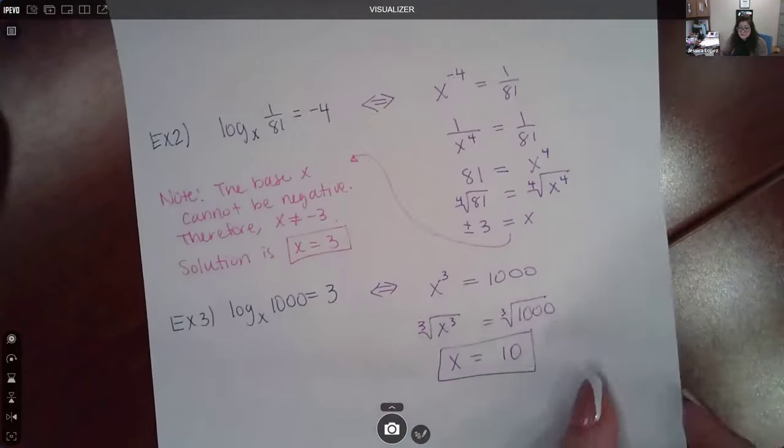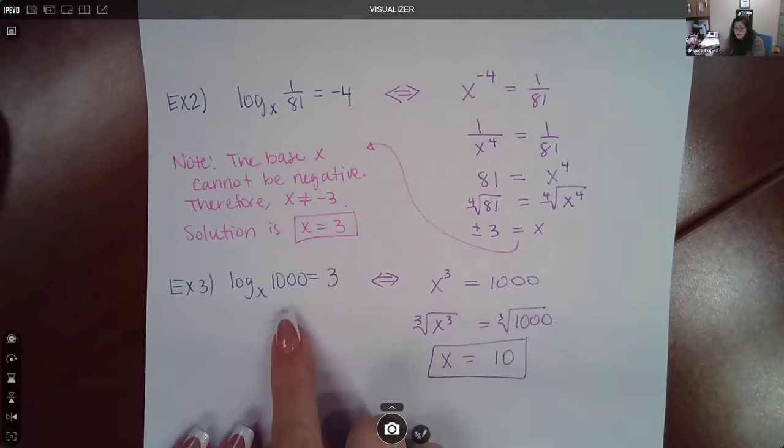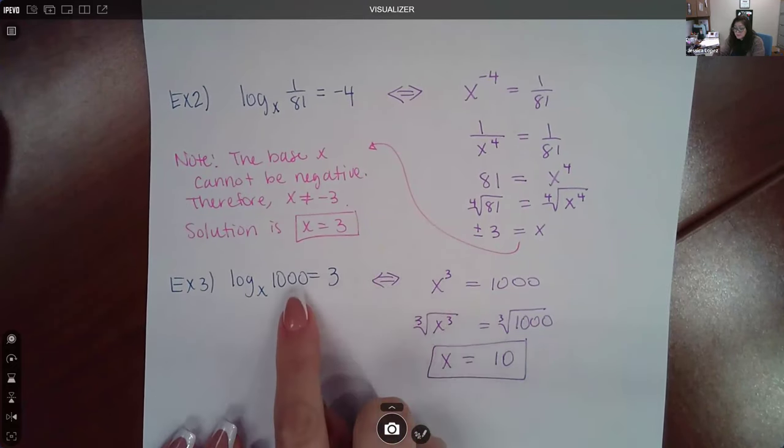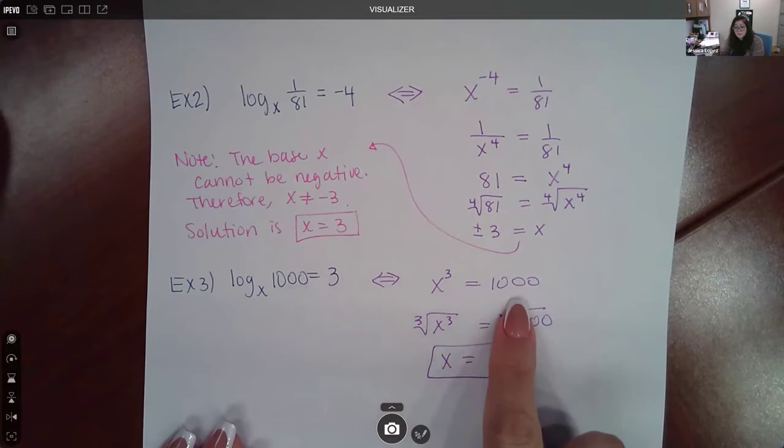Now, finally, for the last example, again, if we turn it over into its exponential form, the X is the base, the 3 is the exponent, and it's now equal to that argument 1,000.